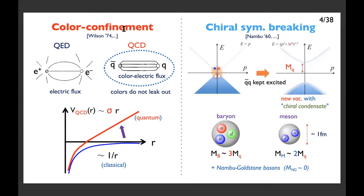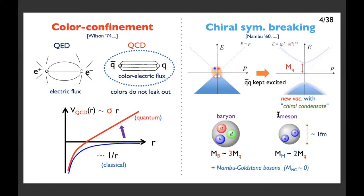Together with color confinement and chiral symmetry breaking, the basic actors in QCD are baryons — made of three constituent quarks — and mesons — made of quark and antiquark. The baryon mass is about three times the constituent quark mass, of order 1 GeV, and meson mass is about twice the constituent quark mass. In addition, there are Nambu-Goldstone bosons associated with chiral symmetry breaking. All these objects are the main actors in low-energy QCD.